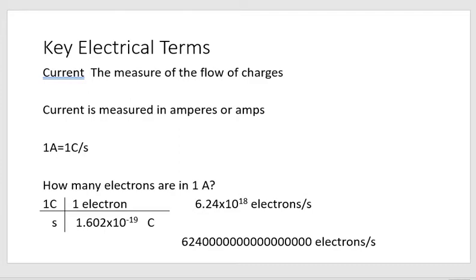If we have one amp flowing — that's one coulomb of charge per second — what does that really mean? It means this many electrons are flowing by every second: approximately 6.24 × 10¹⁸ electrons. We're not going to calculate it by individual electrons, but we need to understand that when we say 0.5 amps, it's half that number of electrons flowing by. We use numbers like amps because they're just the right size — we don't want to say '6.24 × 10¹⁸ electrons flowing by.' It's easier to say one amp.